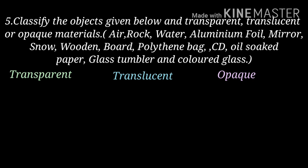Fifth one: Classify the objects given below as transparent, translucent or opaque materials. The objects are: air, rock, water, aluminium foil, mirror, snow, wooden board, polythene bag, CD, oil-soaked paper, glass tumbler and coloured glass. Let us see one by one. First: air — it is a transparent material, it comes under transparent.